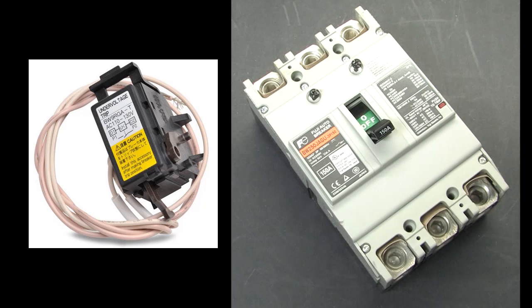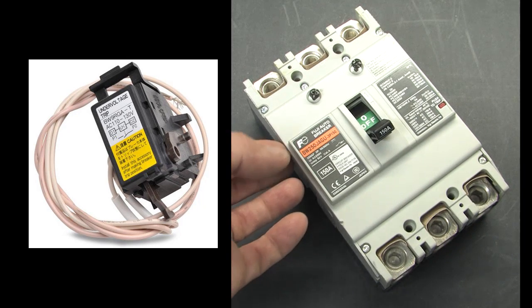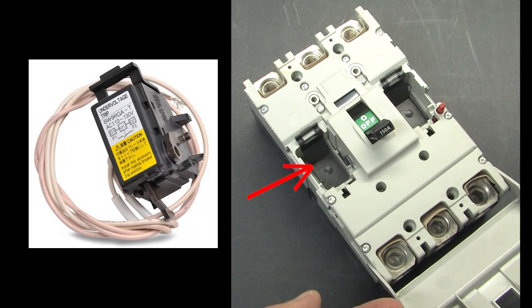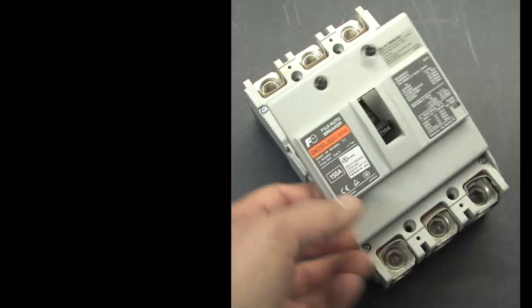Here is an example of a UVR for an MCCB. These are typically mounted inside the breaker here. Once the line voltage is back up, you then go manually reset the breaker.